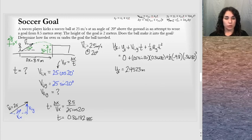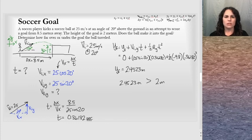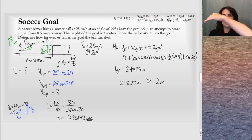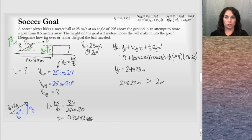Thinking about that in context: y_final = 2.4523 m is larger than the 2 m height of the goal, so the ball is over the top. We also don't know whether it's before or after the vertex of the projectile motion — whether it's still going up or coming back down. Either way, it's 2.5 m above the ground, which is 0.5 m over the goal. Whether rising or descending, it clears over the top of the goal, so the ball does not make it into the goal.